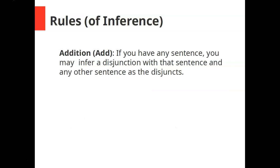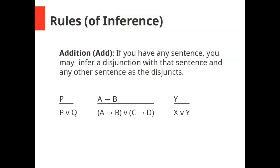The second rule we want to add is called the rule of addition. It says if you have any sentence, you may infer a disjunction with that sentence and any other sentence as the disjuncts. So if you have P, you're allowed to infer P or Q. If you have (if A then B), you're allowed to infer (if A then B) or (if C then D). And if you have Y, you can infer X or Y.